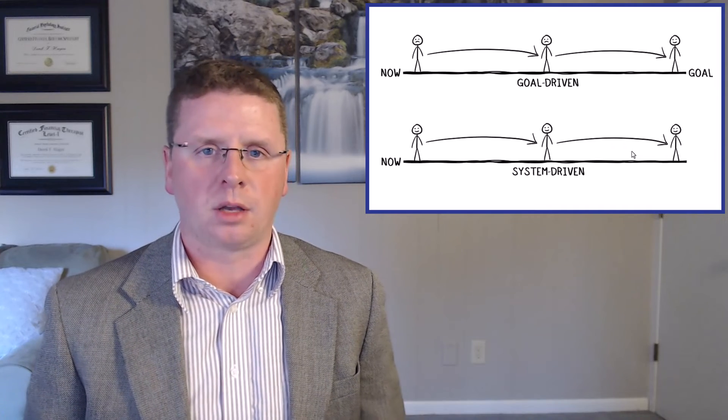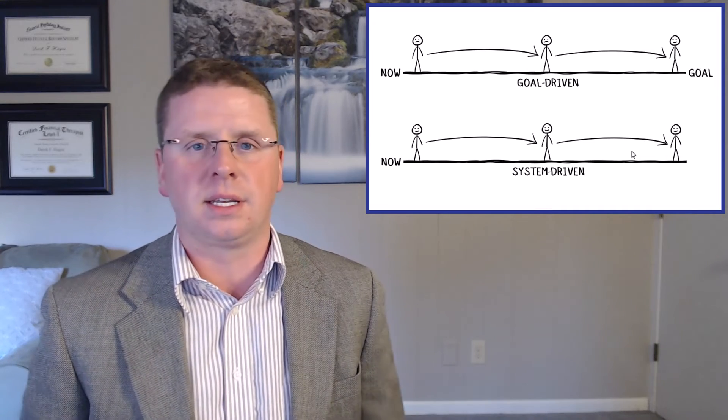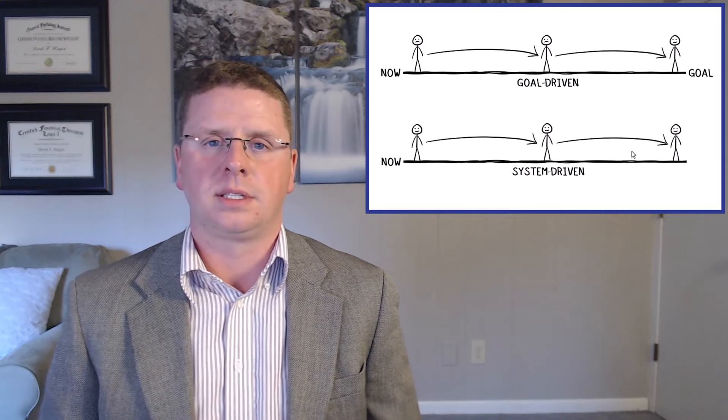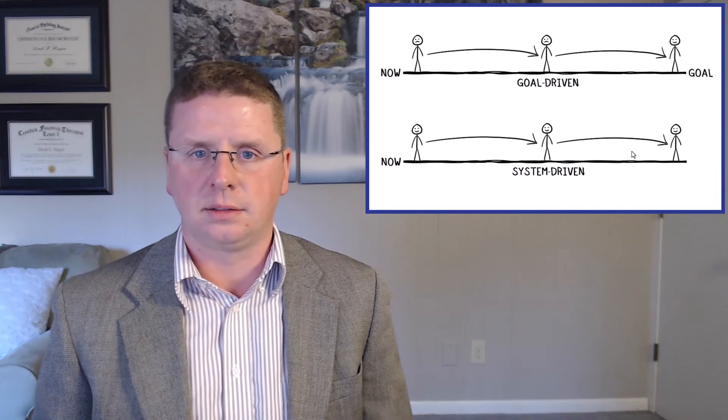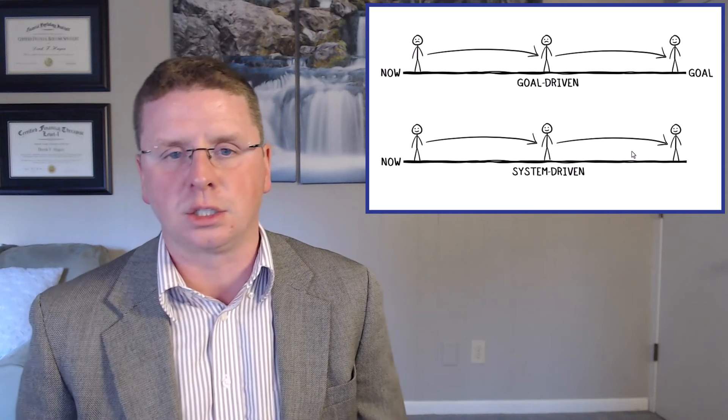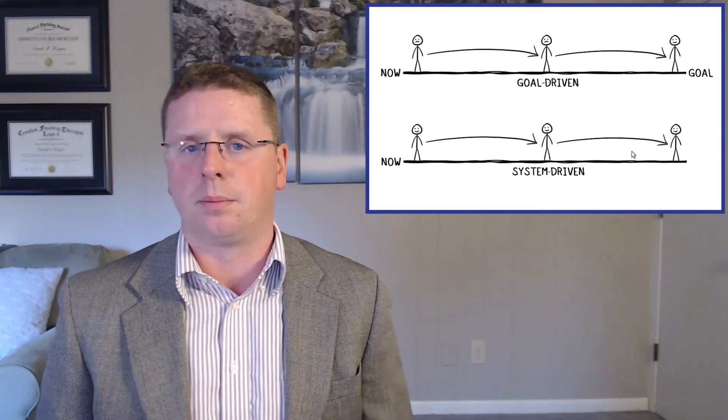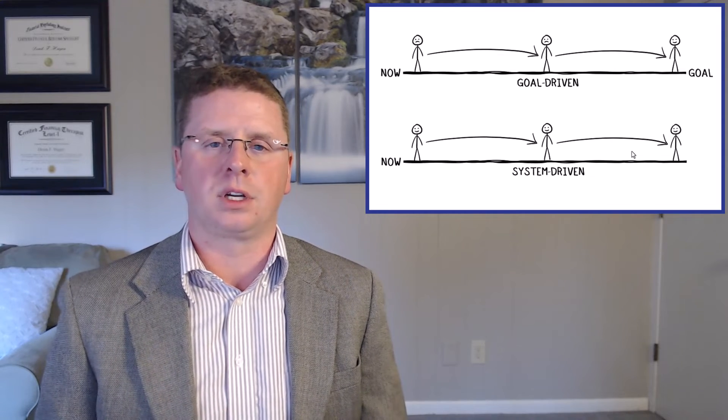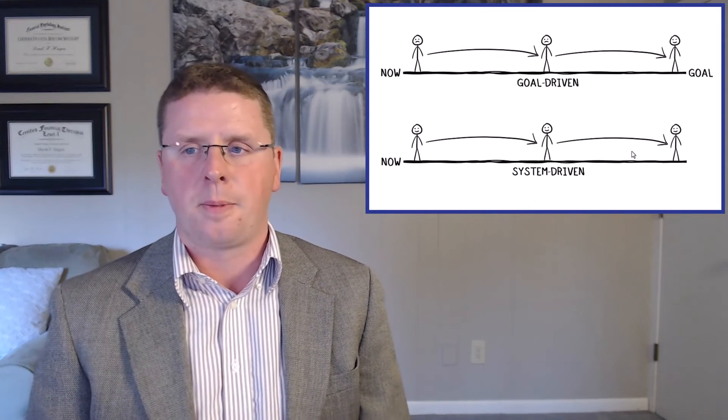So a system would be doing something that increases my marketability, being active every day, learning to eat right, exercising. So a system is something you do every day. A system is in your control. A goal is an outcome, and outcomes are largely outside of your control.